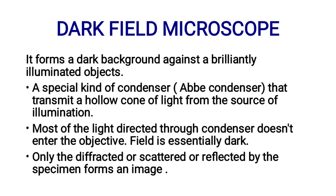The second type is the dark field microscope, which forms a dark background against brilliantly illuminated objects. In this kind of microscope, a special condenser called an abbe condenser is used. It transmits a hollow cone of light from the source of illumination. Most of the light directed through the condenser does not enter the objective, so the field is essentially dark.